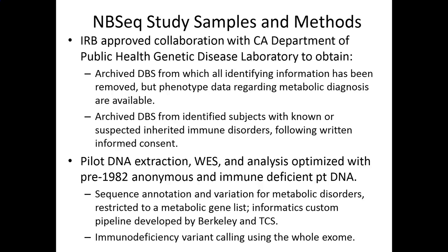These are the methods and samples that we are using. We have an IRB-approved collaboration with the California Department of Public Health Genetic Disease Laboratory. Through this collaboration, we are obtaining archived dried blood spots from which all identifying information has been removed, but the phenotype or clinical data regarding the metabolic diagnosis is still available. We are also getting archived dried blood spots from identified subjects with known or suspected immune system disorders, obtained following written informed consent. Our pilot DNA extraction and whole exome sequencing and analysis have been optimized with very old anonymous samples and also samples from our immune-deficient patient cohort.